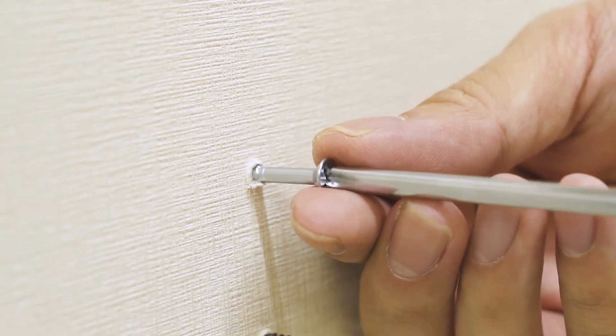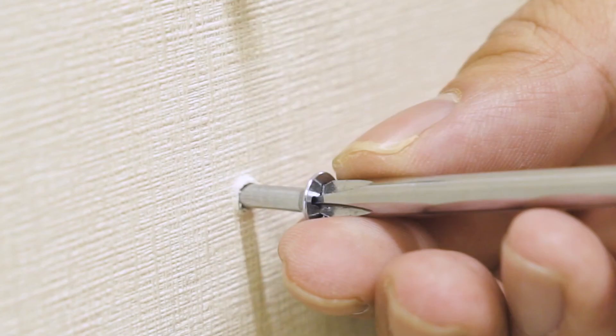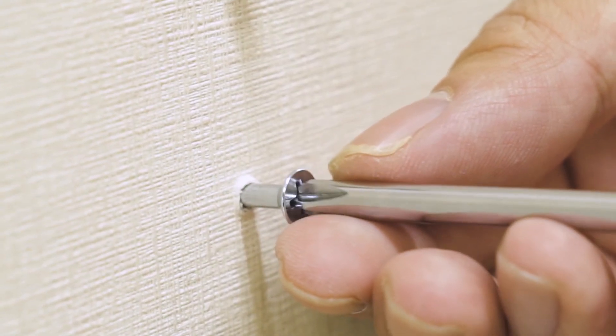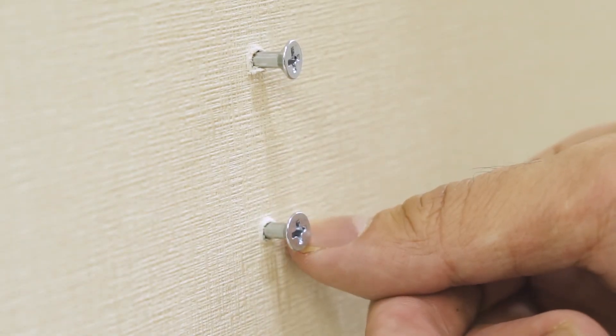Insert the screws into the holes and tighten them until only a quarter inch of the screws are exposed outside. That's around the length of your fingertips.